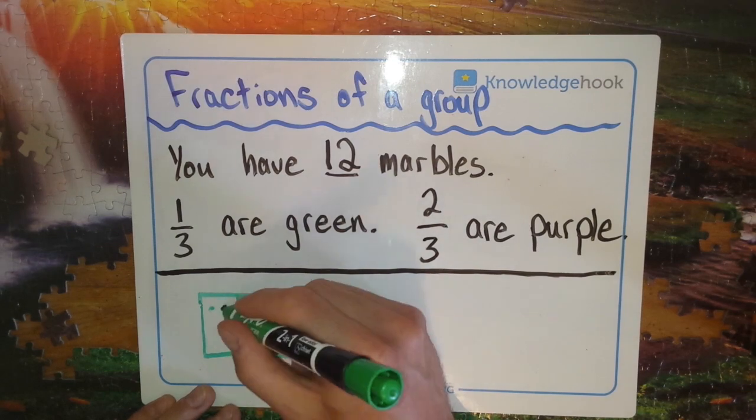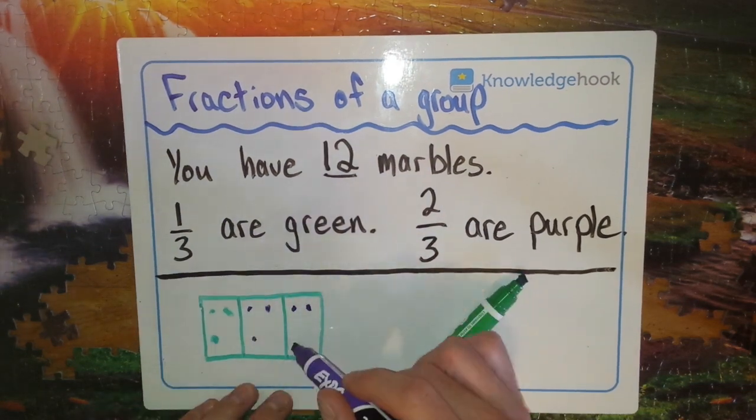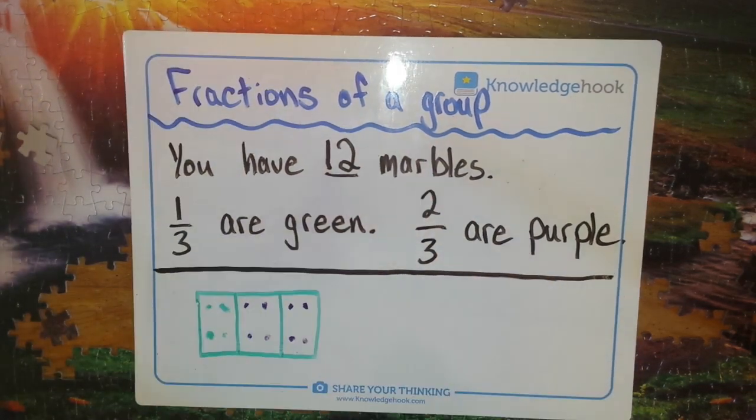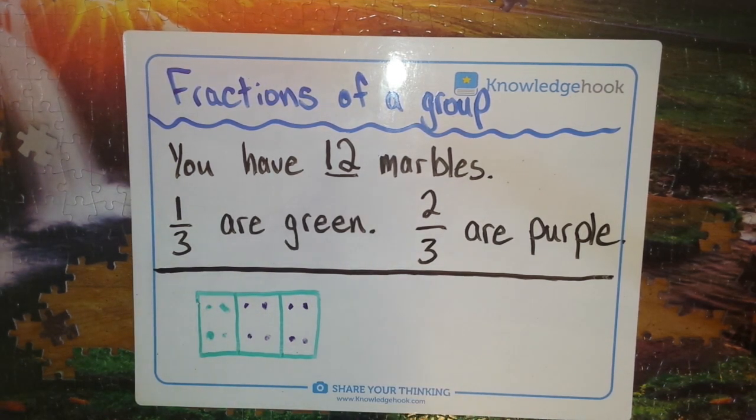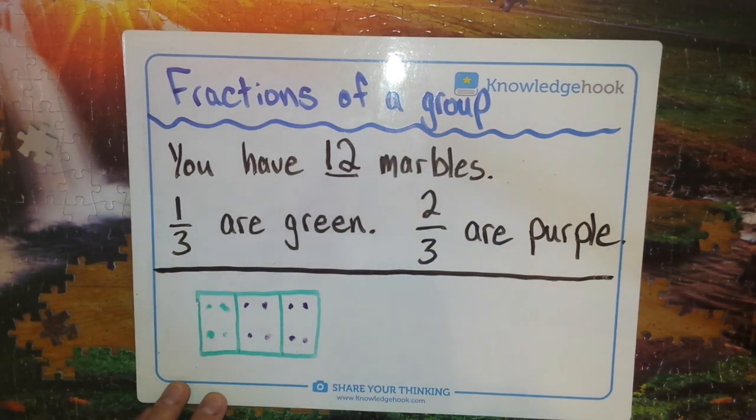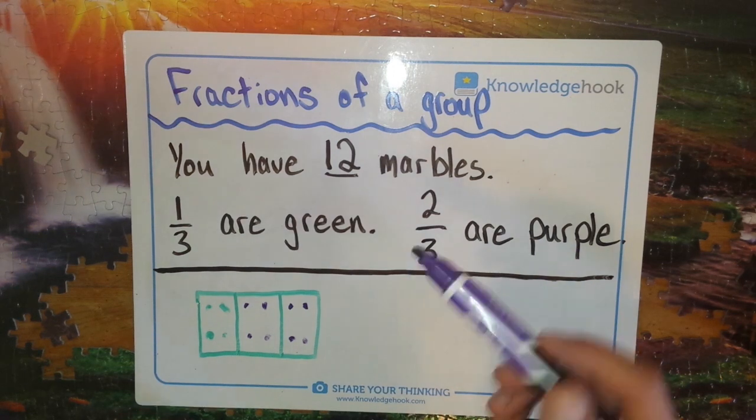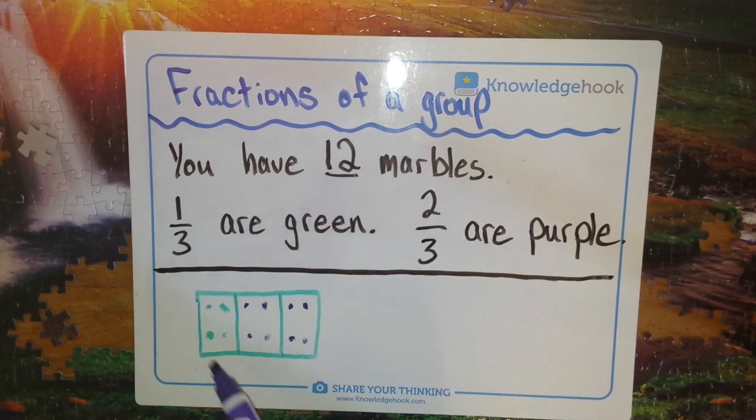So if one third are green, then four marbles are green and eight marbles are purple. And we'll remember from the previous example that one third of twelve is four and two thirds of twelve is eight, so that makes sense. We could also leave out the fraction picture and just add them up over here.